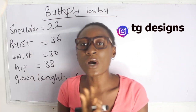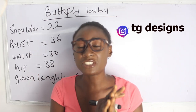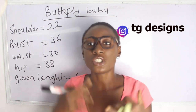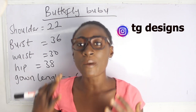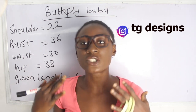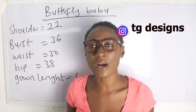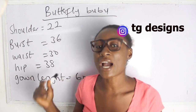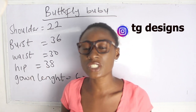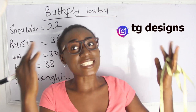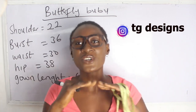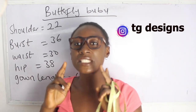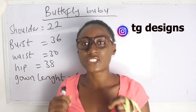Now, what are the basic measurements required in order for you to achieve this style? Your shoulder measurements, your bust, your waist, your hip, and your gown length. You will also discover that our shoulder measurement is 22 inches, which is a whole lot for your regular shoulder measurements. There are two ways in which you can achieve your shoulder measurement.